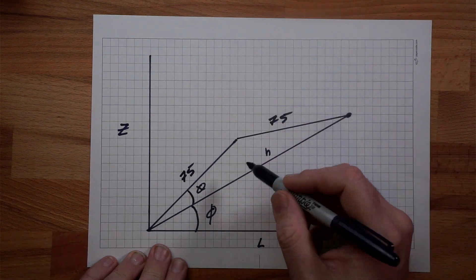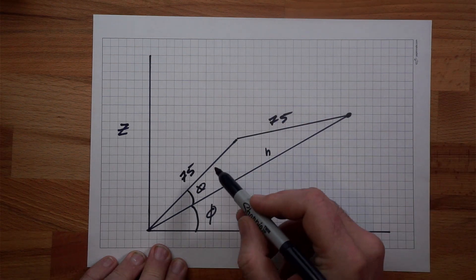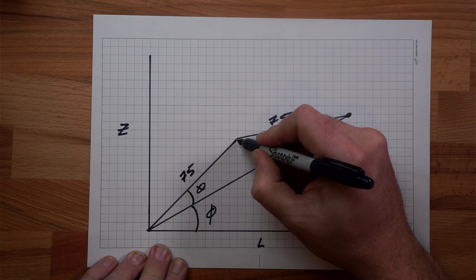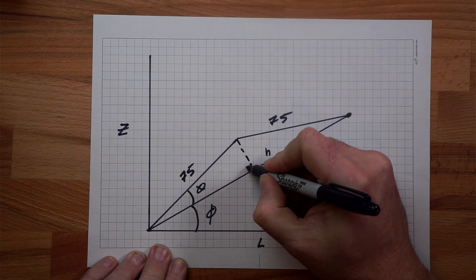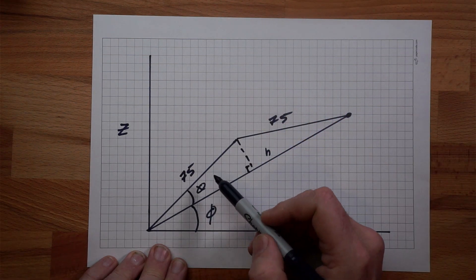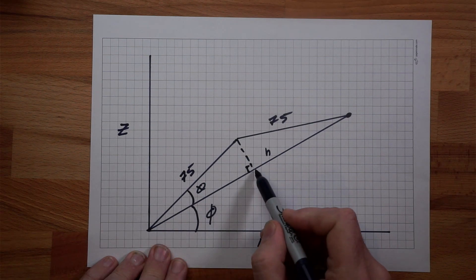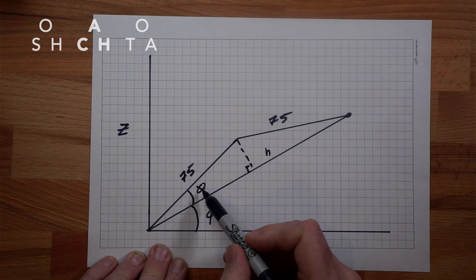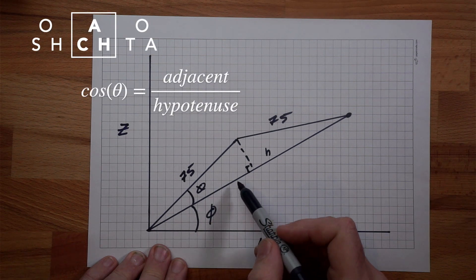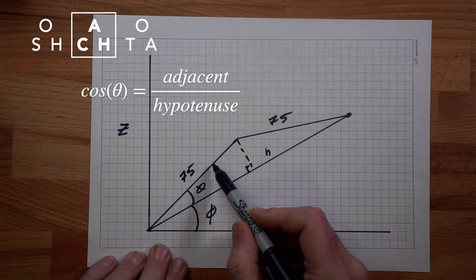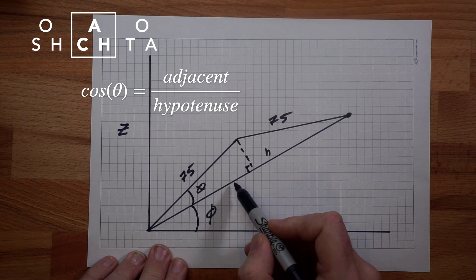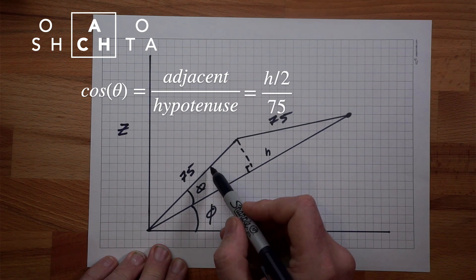So we can simply split this isosceles triangle defined by these three lines into two right angle triangles. Now we know the length of two of these sides 75 and H over 2. We can say that the cosine of theta is equal to the adjacent over the hypotenuse which is H divided by 2 over 75.